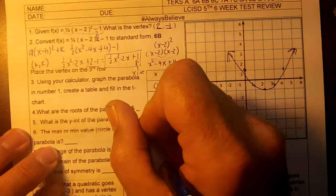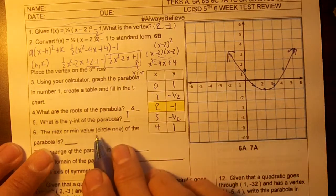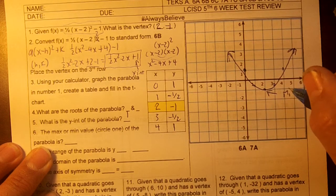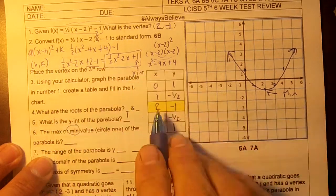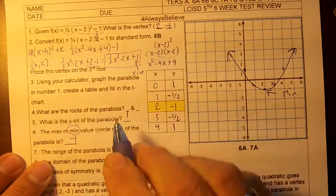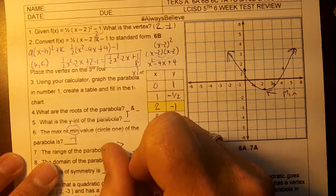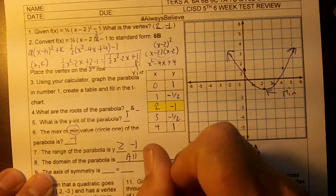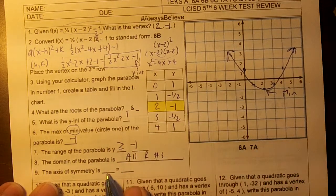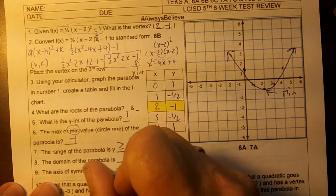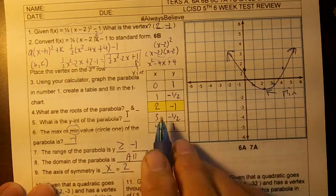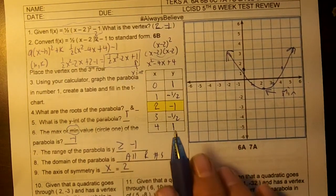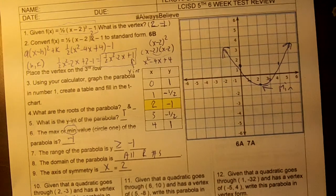So the y-intercept of the parabola is one. The max or the min of the parabola, this right here is our minimum. So the max or the min, we have a minimum. The minimum is negative one. The range is y is greater than our minimum. The domain is going to be all real numbers. The axis of symmetry is x equal to. And now I need to find the zeros. I'll be back. I'll get the zeros on the next one. Let me go get my calculator.